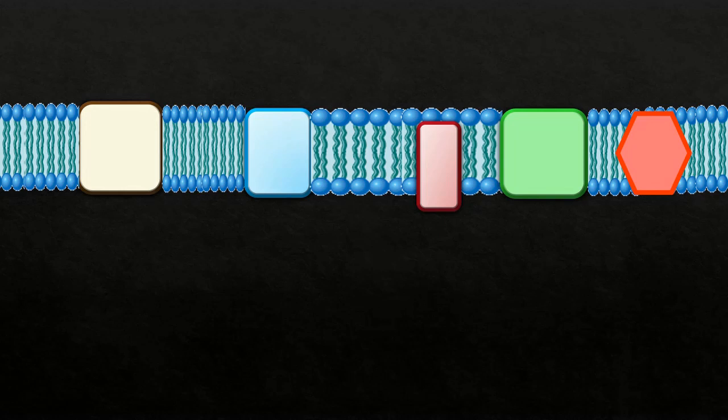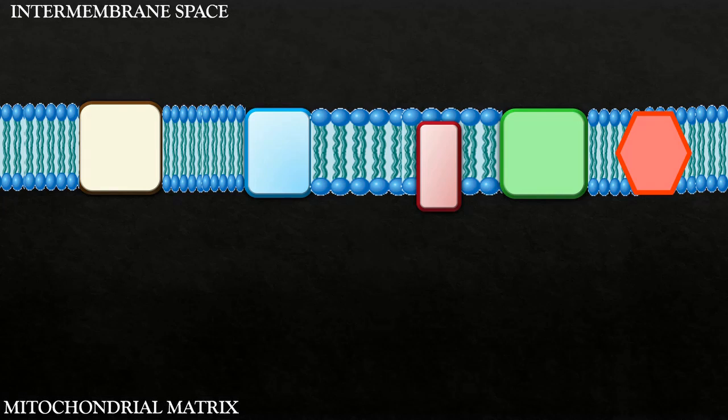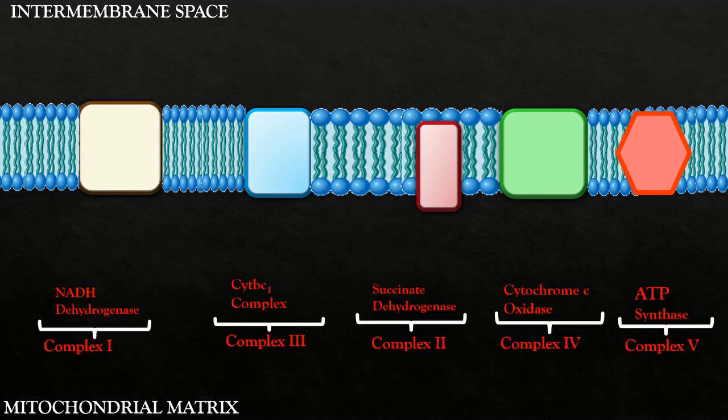Now we come to our topic. First, you have to understand the design of electron transport chain so you have an idea as to how it works. You are watching inner mitochondrial membrane in this slide. The bottom portion of the slide represents mitochondrial matrix and the top represents its intermembrane space. There is a series of complexes shown here in different colors. These complexes are numbered from 1 to 5.